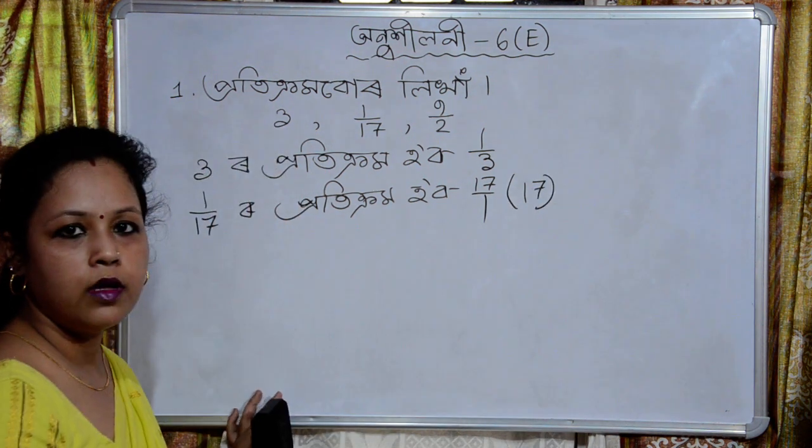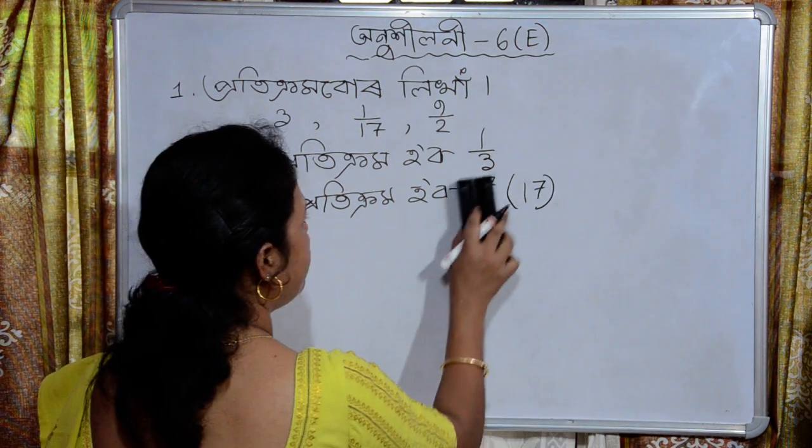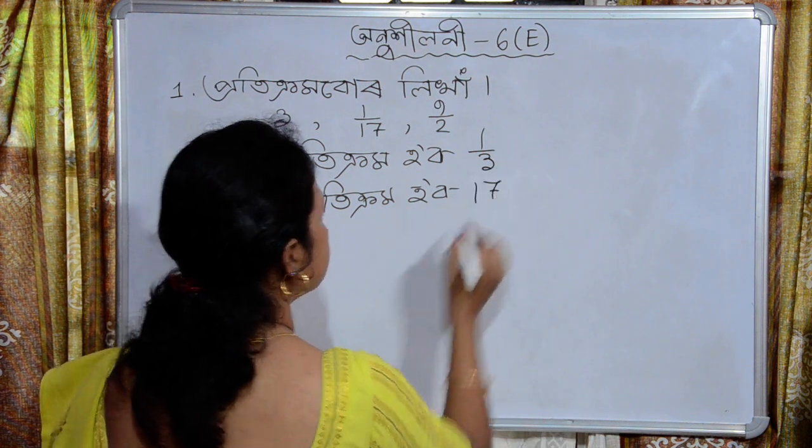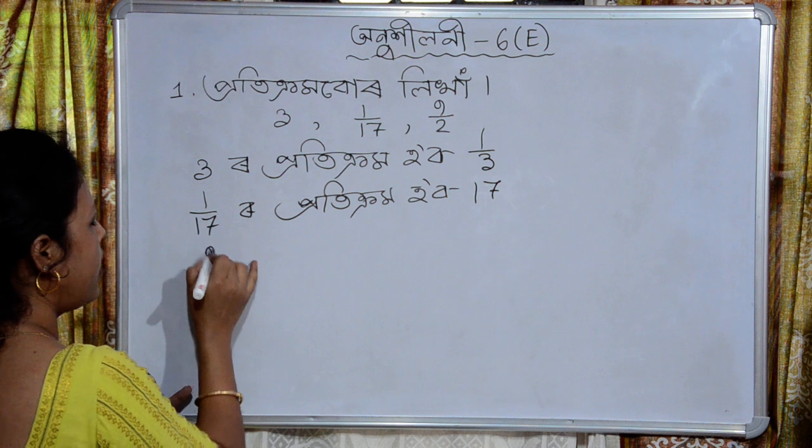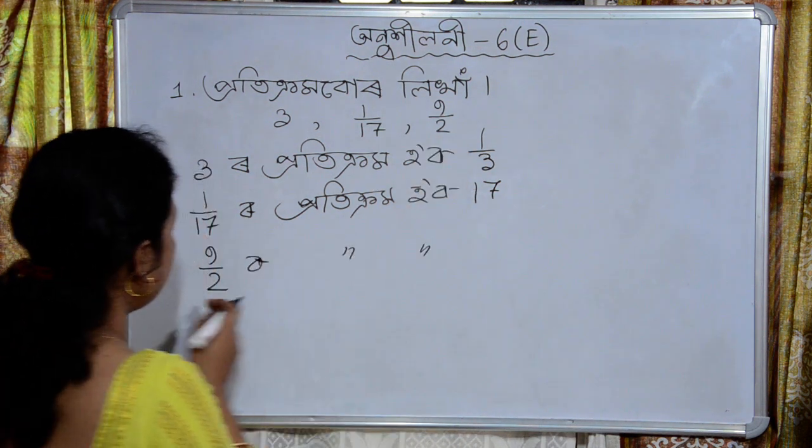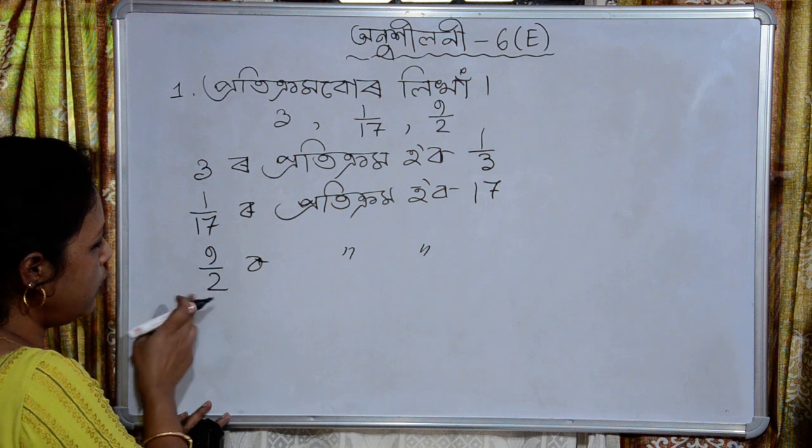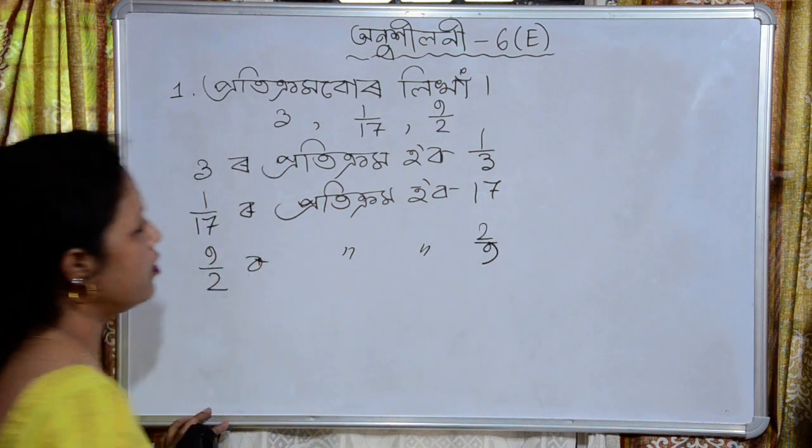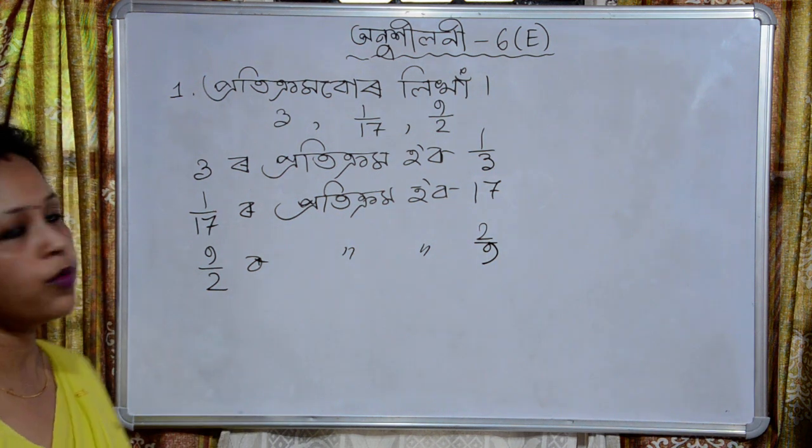I will write for 1, which will be 17. So 1 by 17 will be 17. 9 by 2, which will be 9 by 2.